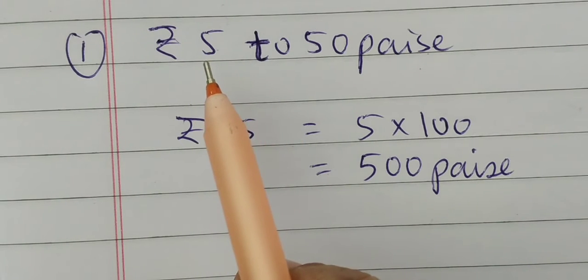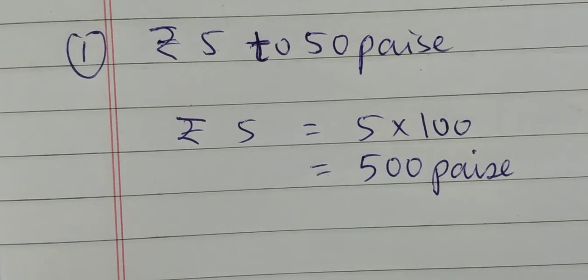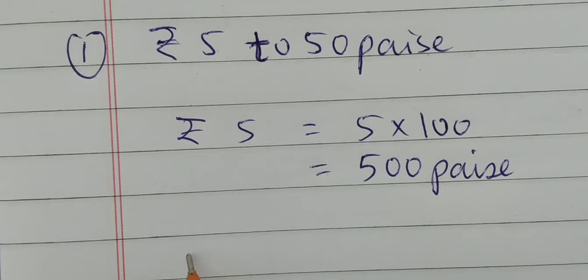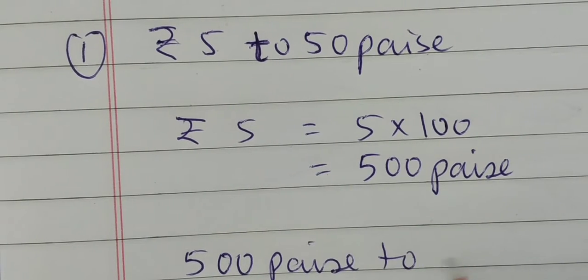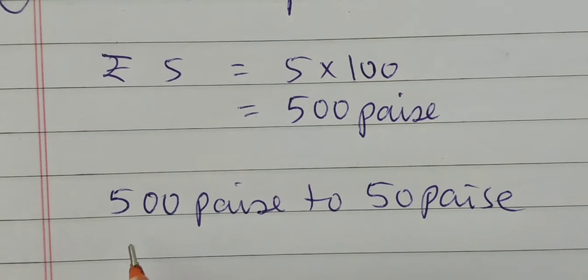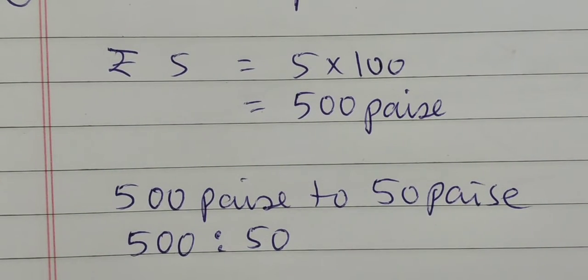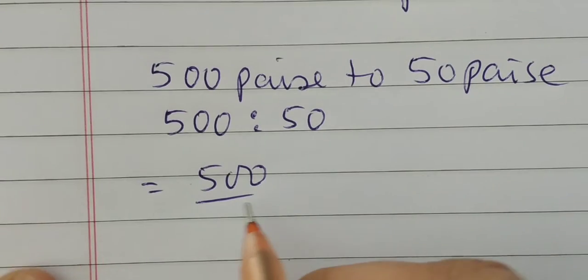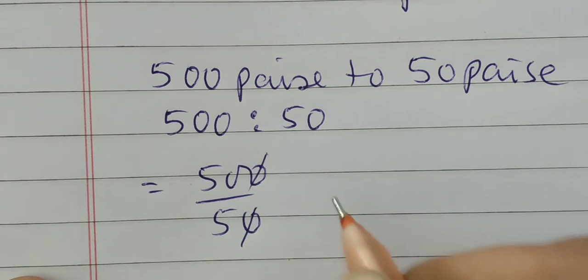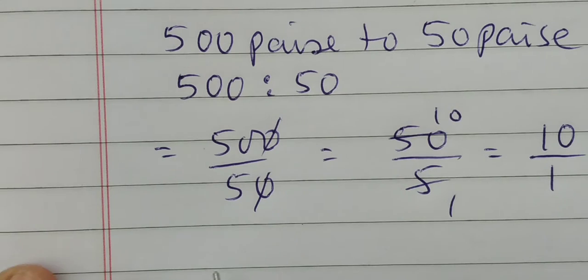Now in place of rupees 5, we will put 500 paise, because we know 1 rupee equals 100 paise. So in place of 5 rupees, we will write 500 paise to 50 paise. Now I will express it in the ratio form: 500 is to 50. Simplify it: 500 upon 50.